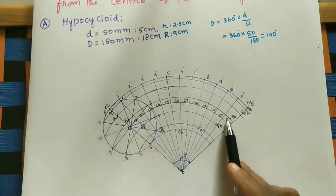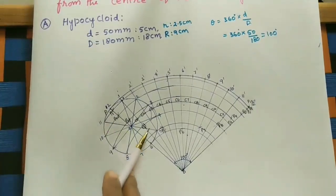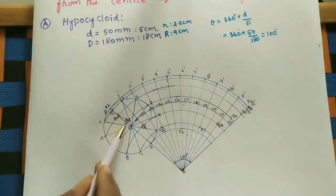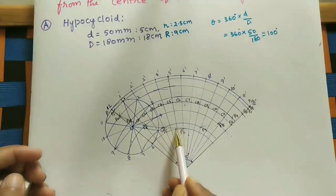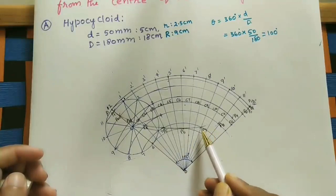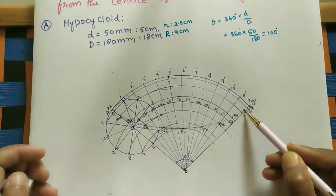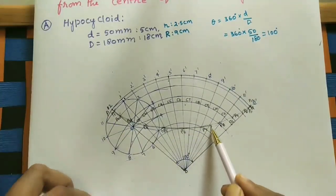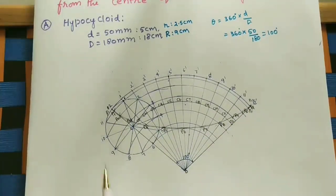If you join all the P points, we are getting the hypocycloid. Join all the P points with the freehand curve. So this path is called hypocycloid. Make it dark.